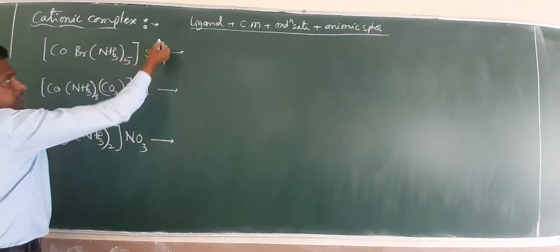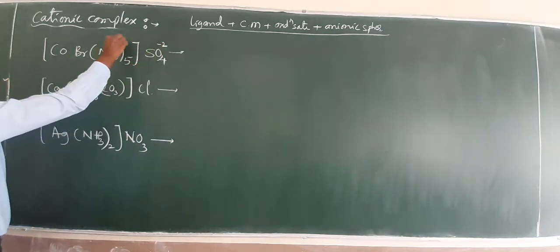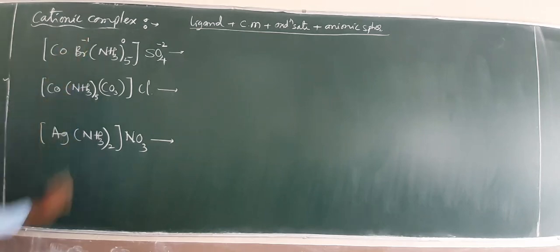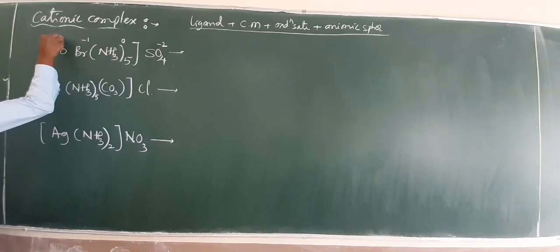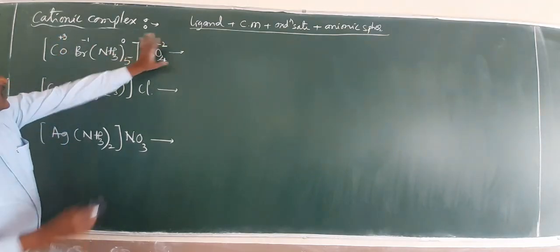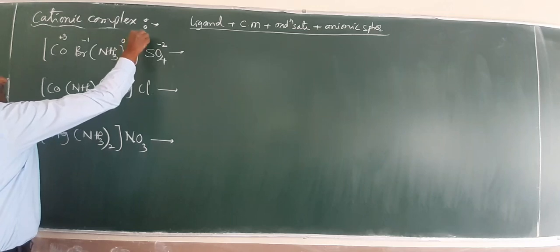So first one, SO4 is minus 2. Ammonia is a neutral ligand. Bromido is a minus 1 charge. Total minus in the tube is 3. Automatically cobalt is 3. Just to close ionic sphere, the net charge is plus 2.